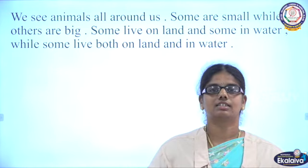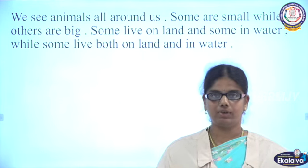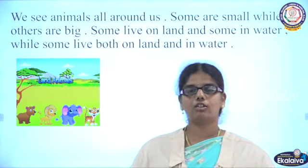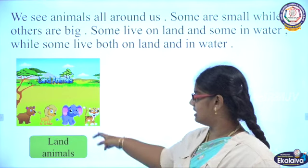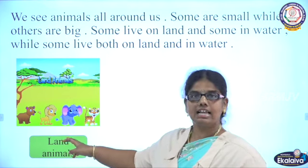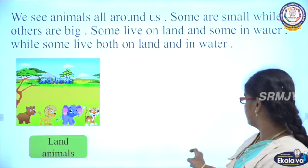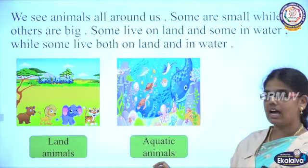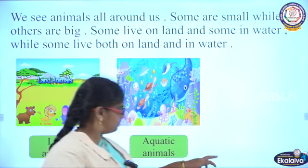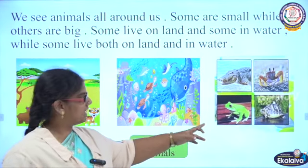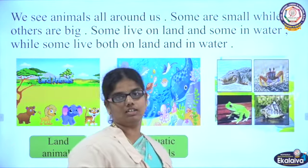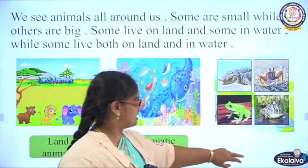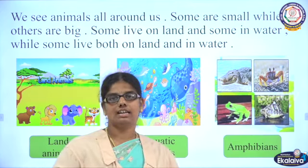We have seen many animals. Some animals will be very small and some will be very big. Some animals live on land — they are called land animals. Some animals live in water — they are called aquatic animals. Some animals live both on land and in water; sometimes they will be in the water and sometimes on land. They are called amphibians.